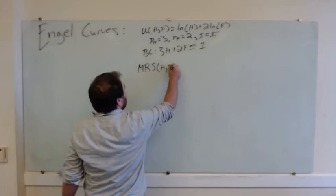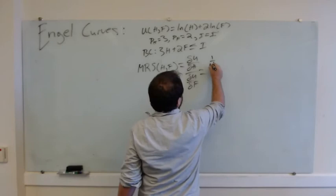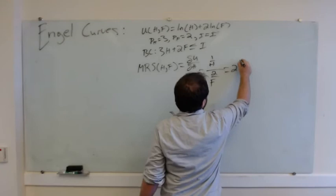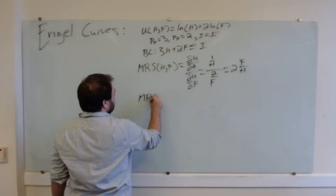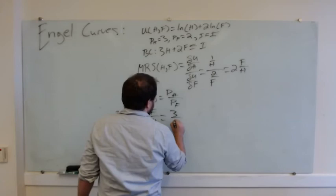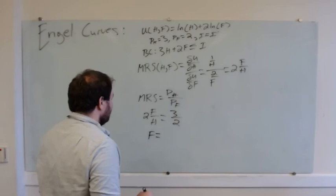We'll say our MRS of h and f is going to equal du dh over du df. du dh is 1 over h, and du df is 2 over f. So, this thing is just going to be 2 times f over h, set that equal to our price ratio. Ph over pf, it's got to match du dh over du df, ph over pf. So, then we'll say 2f over h has to equal, ph is 3, pf is 2, and that's going to let us say that f is going to have to equal 3 quarters times h. Divide both sides by 2, multiply both sides by h.